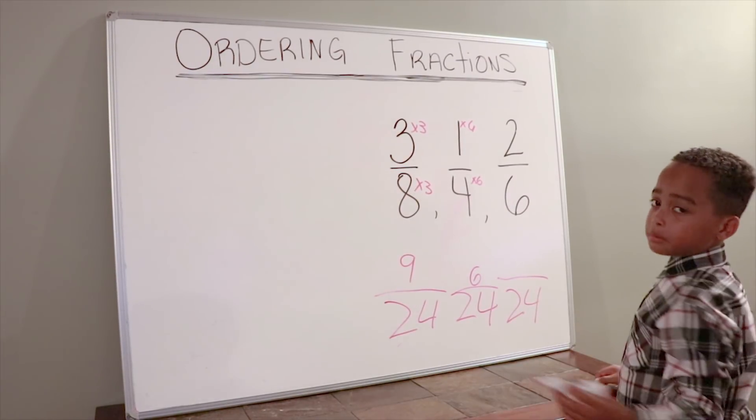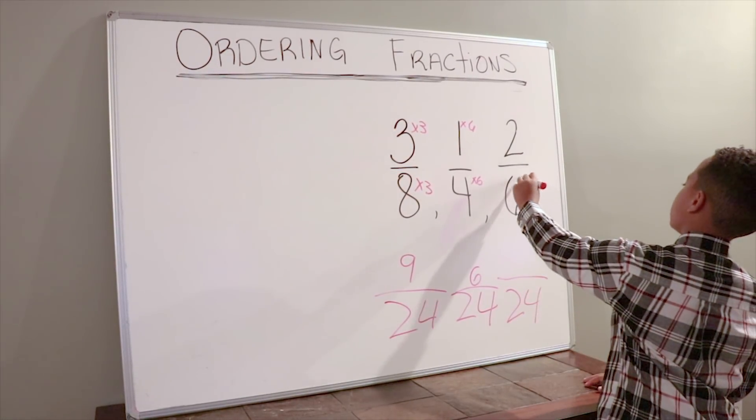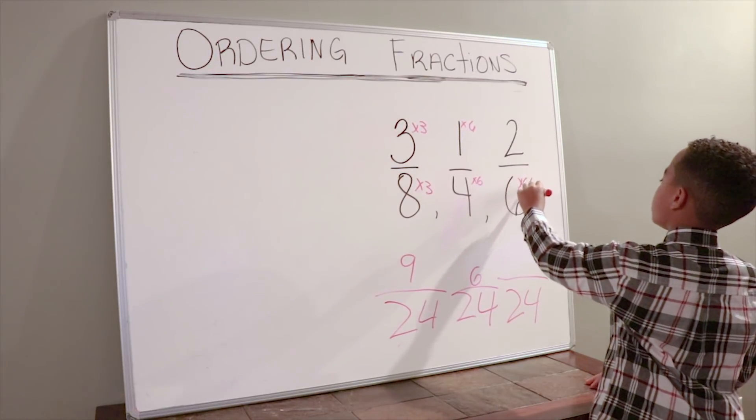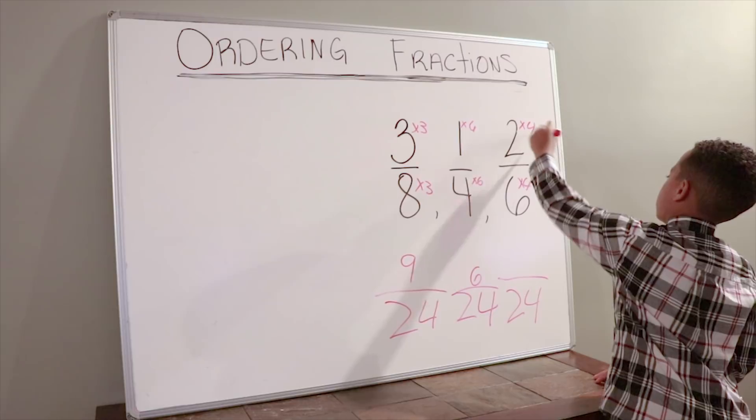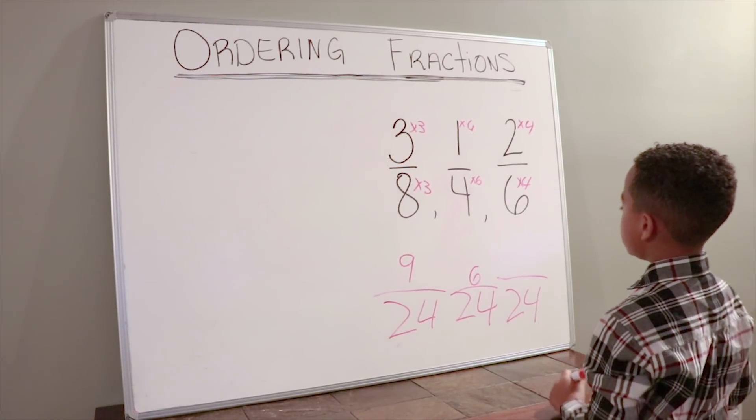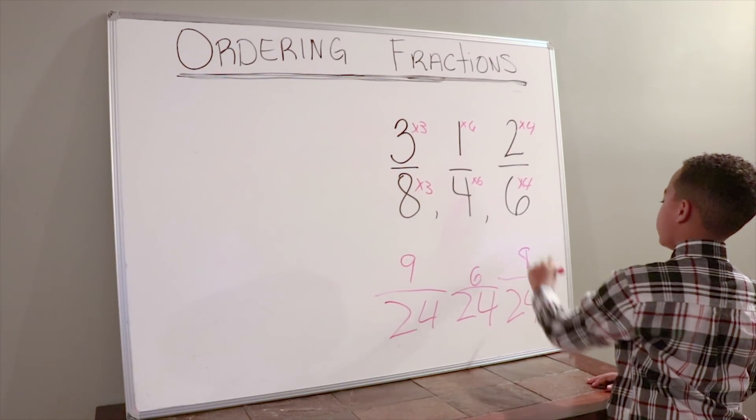Now we times 6 by 4, of course. Now we're going to do 4 times 2 equals 8. We're going to write the 8 as this numerator.